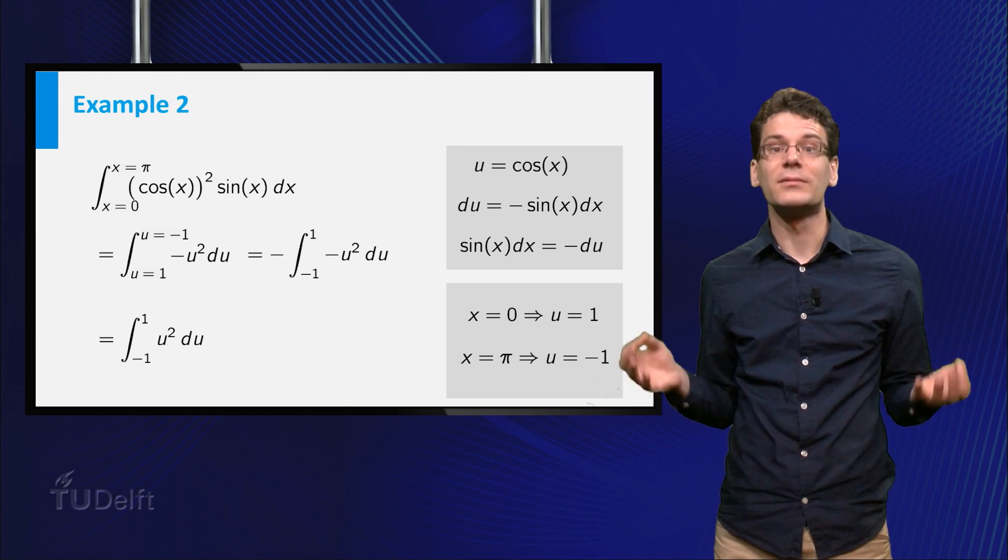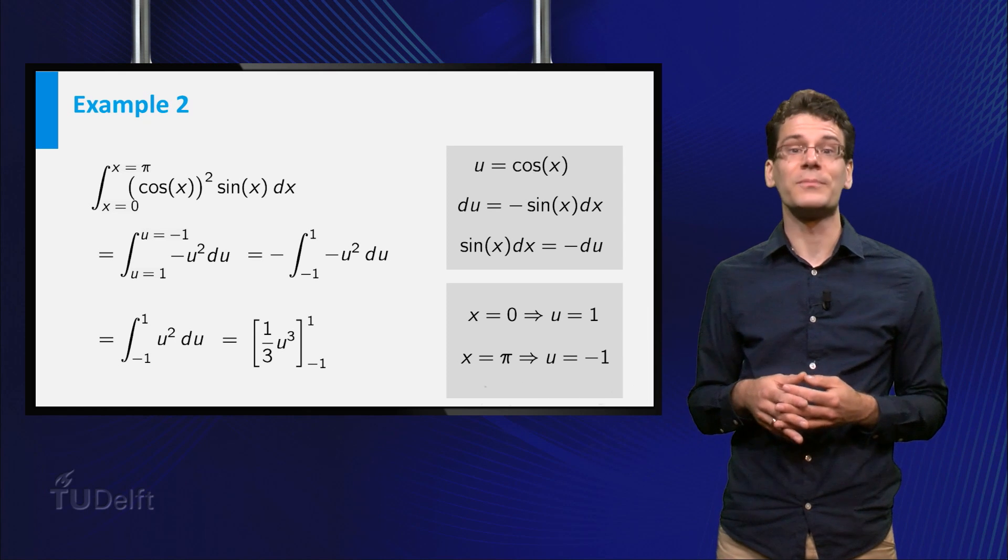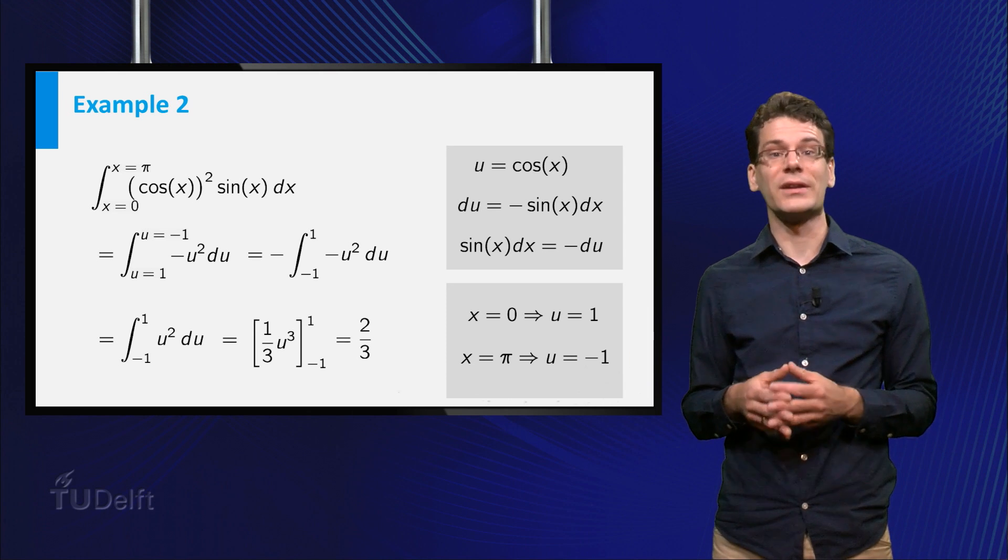This is easily evaluated, a primitive function is 1 over 3 u cubed, and in the end we get 2 over 3 as a result.